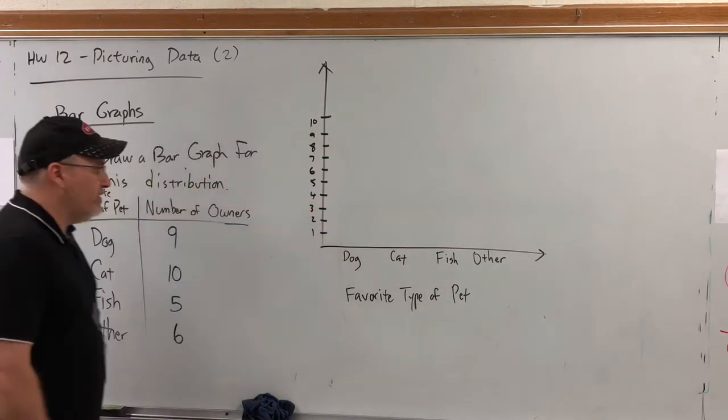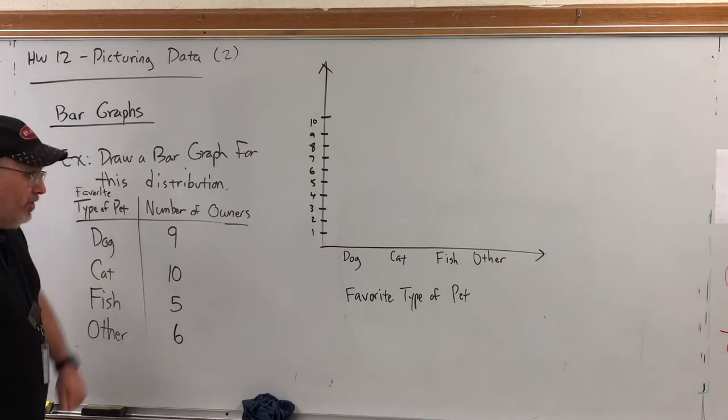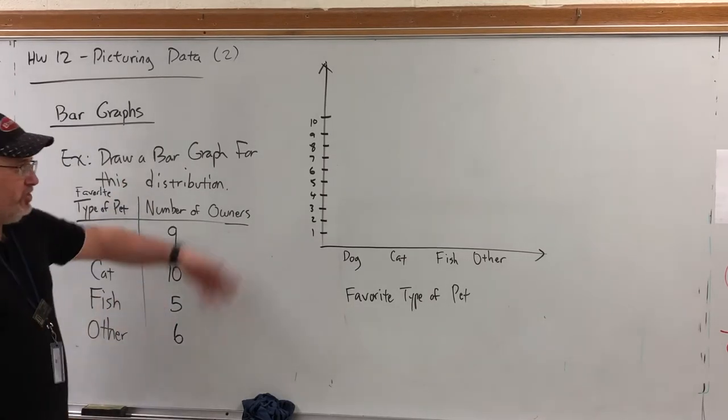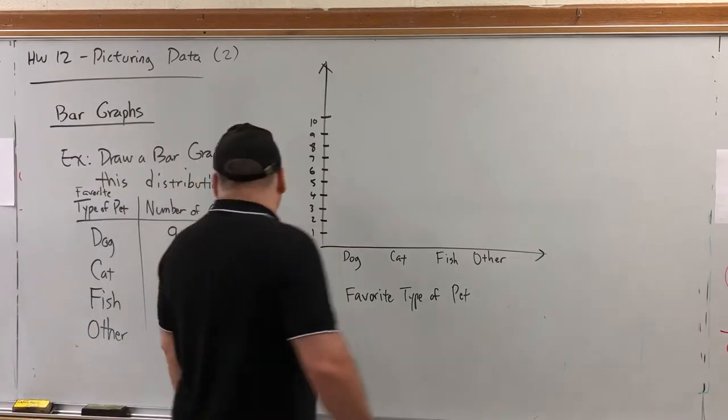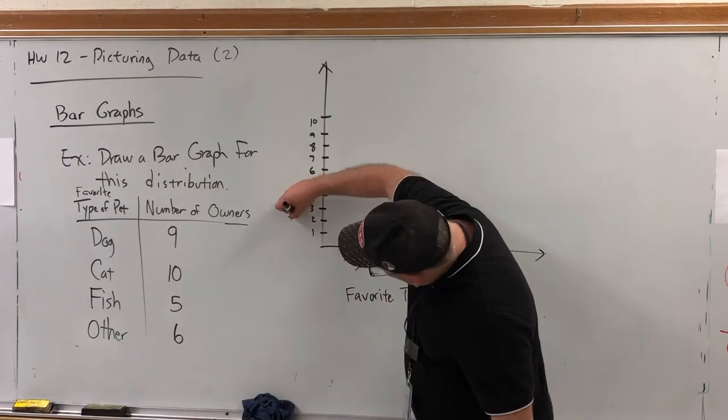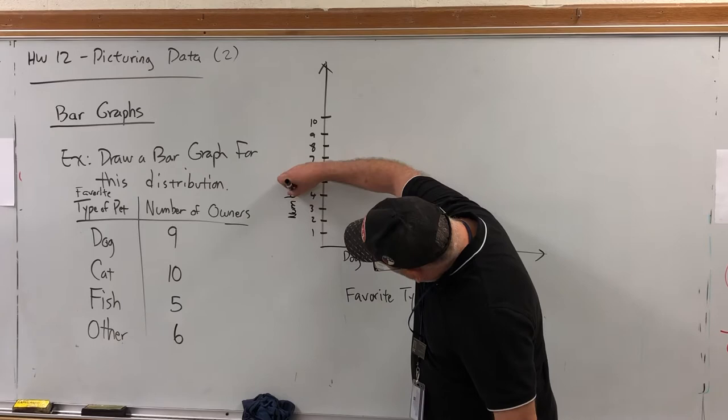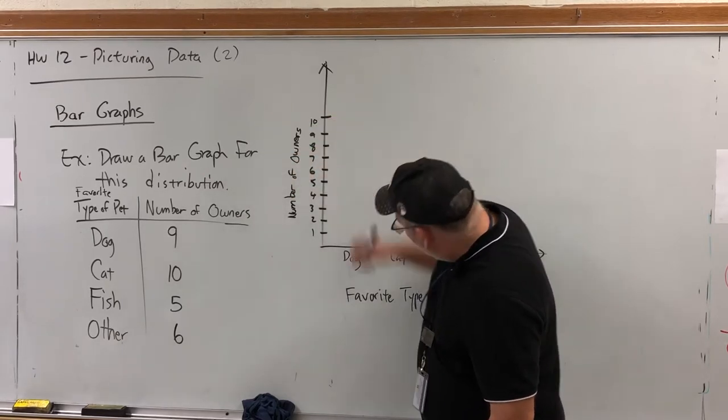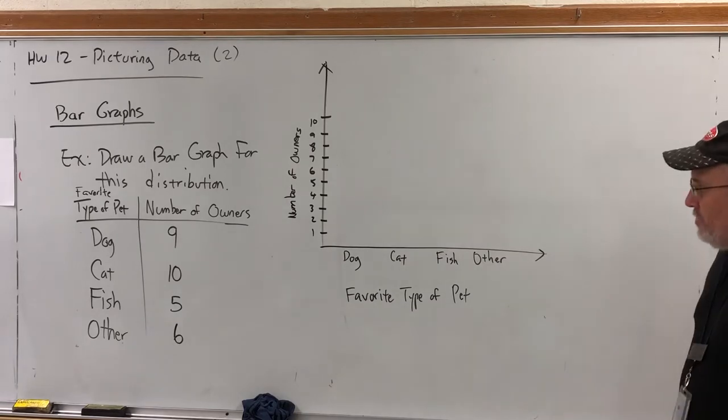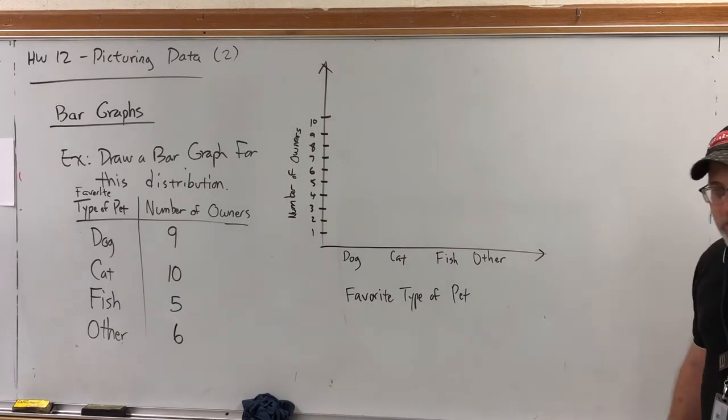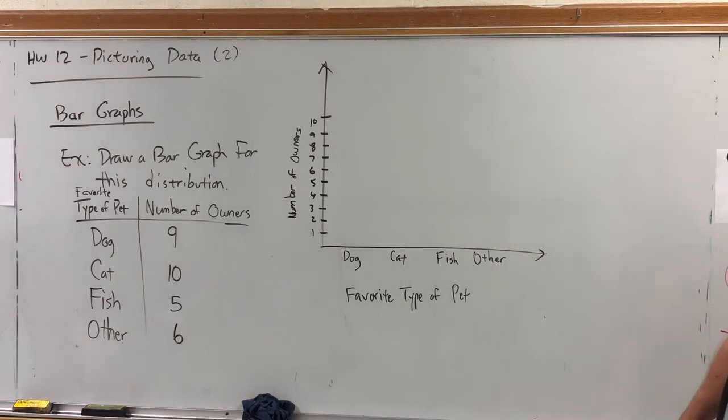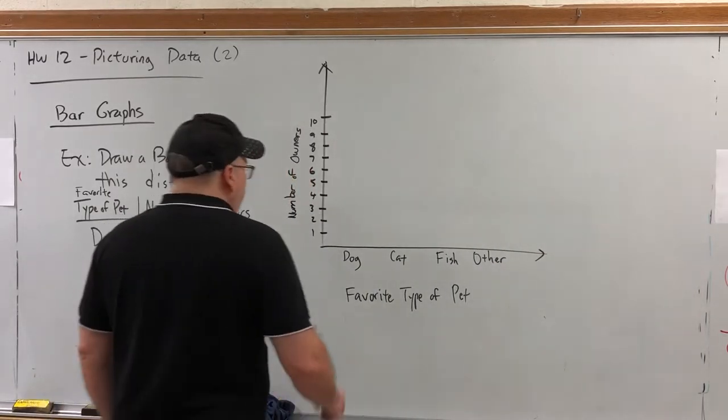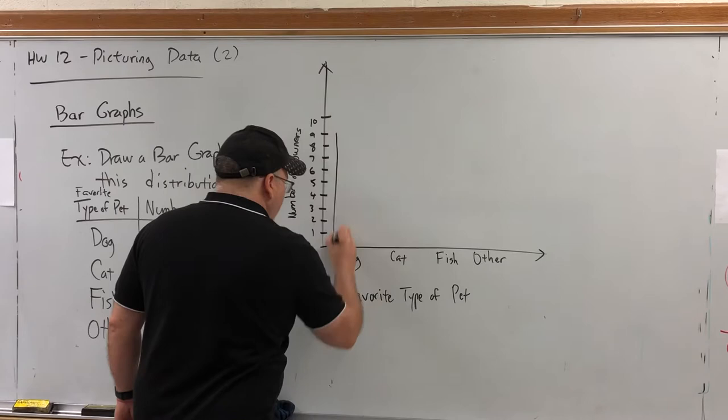And it's important to label the vertical axis to say what these numbers represent. Now, you can write something as generic as frequency, or something as descriptive as number of owners. And then, to draw the bar graph, you just raise a bar above each category, the correct height corresponding to the frequency. For example, nine people said dog. So, we're going to raise a bar up nine from dog.